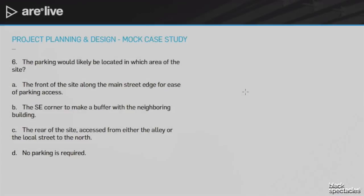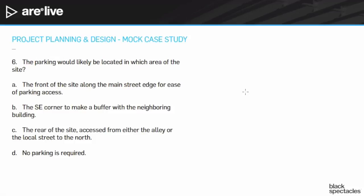Question number six. The parking would likely be located in which area of the site? A, the front of the site along the main street edge for ease of parking access. B, the southeast corner to make a buffer with the neighboring building. C, the rear of the site, accessed from either the alley or the local street to the north. D, no parking is required.